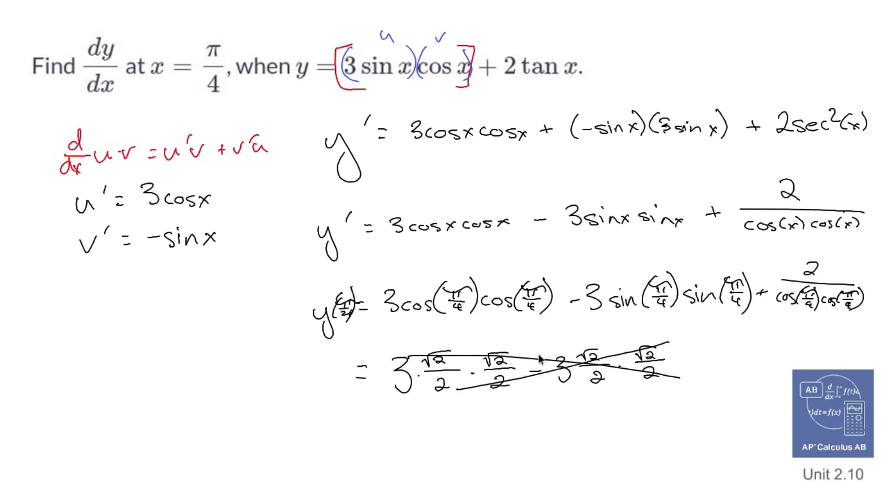And we're left over with 2 over root 2 over 2 times root 2 over 2. So 2 over square root 2 times root 2 is going to be the square root of 4, which is 2, over 2 times 2, which is 4.